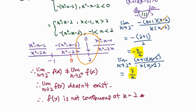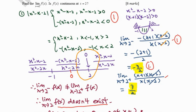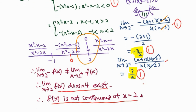Now let's see which parts are important for marks. Expressing the modulus function as a piecewise function earns one mark. Calculating and selecting the correct function earns one mark. Finally, stating that the limit does not exist because the right-sided limit and left-sided limit are not the same, and concluding that the function is not continuous at x equals 2 — that's all.